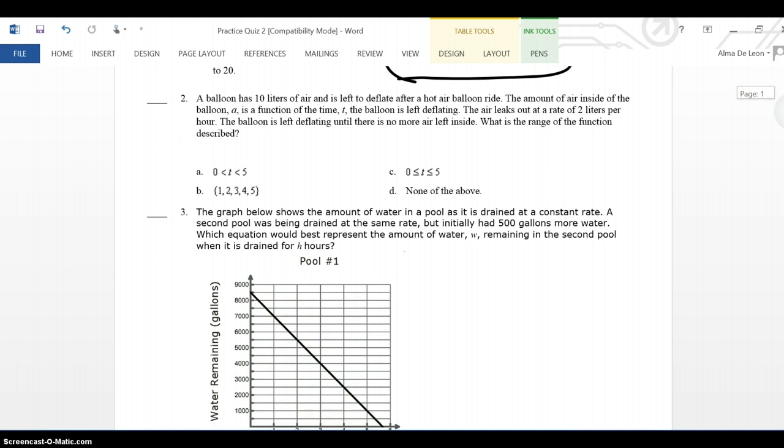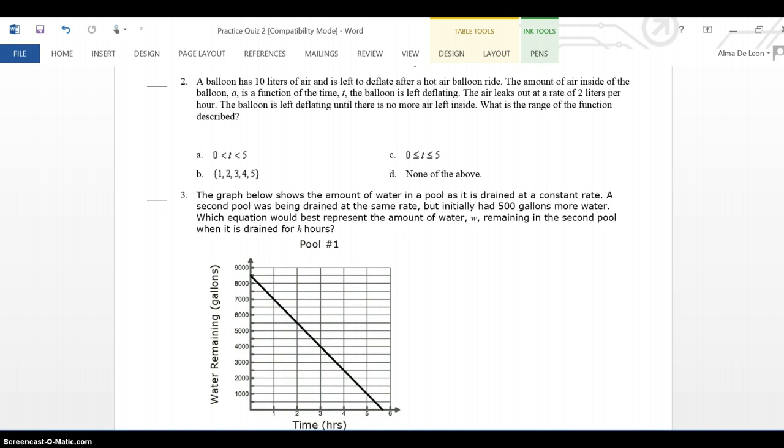Let's look at number 2. A balloon has 10 liters of air and is left to deflate after a hot air balloon ride. The amount of air inside the balloon A is a function of the time T the balloon is left deflating. The air leaks out at a rate of 2 liters per hour. The balloon is left deflating until there is no more air left inside. What is the range of the function described?